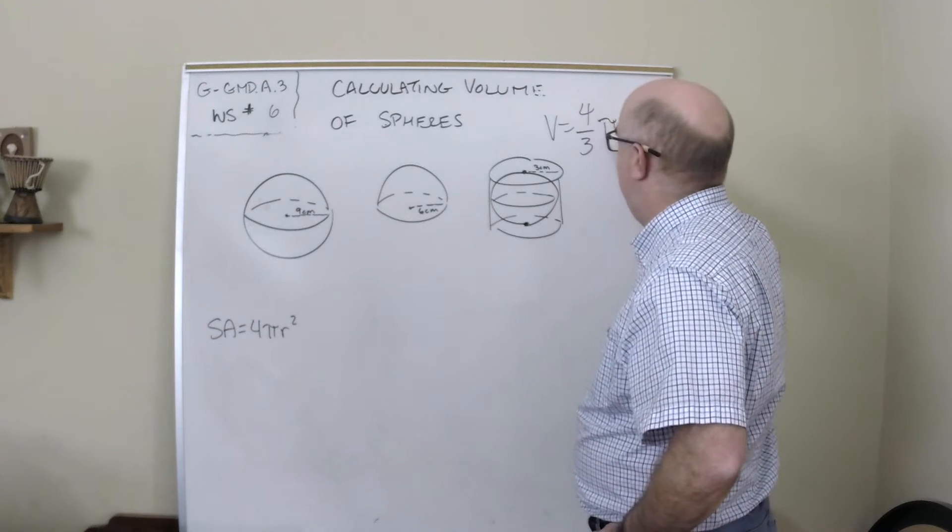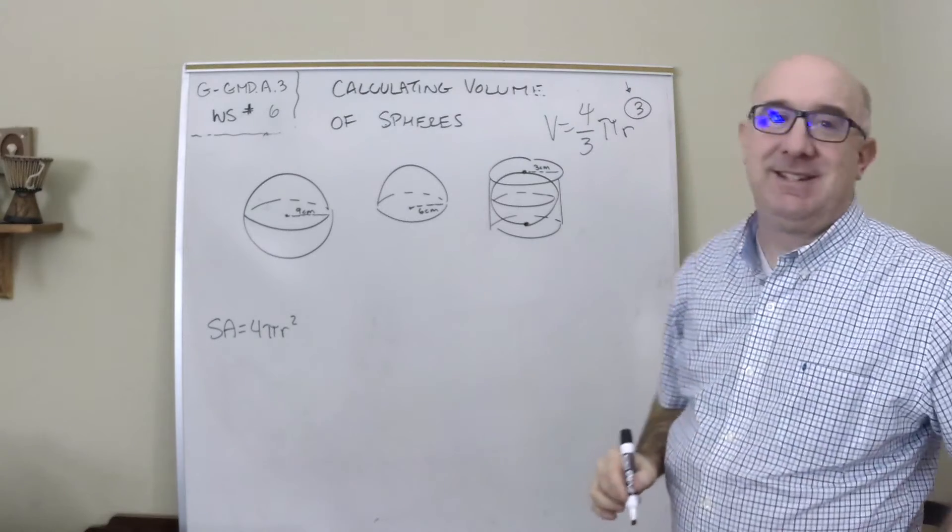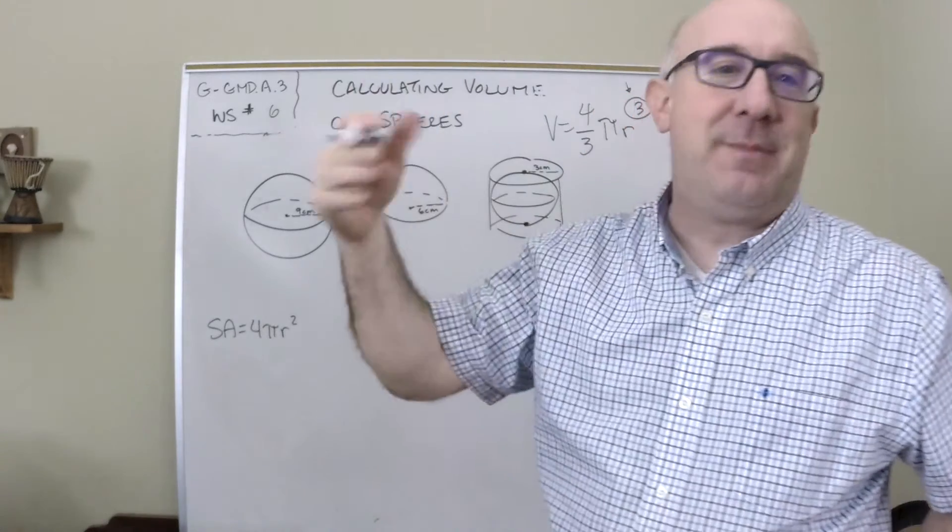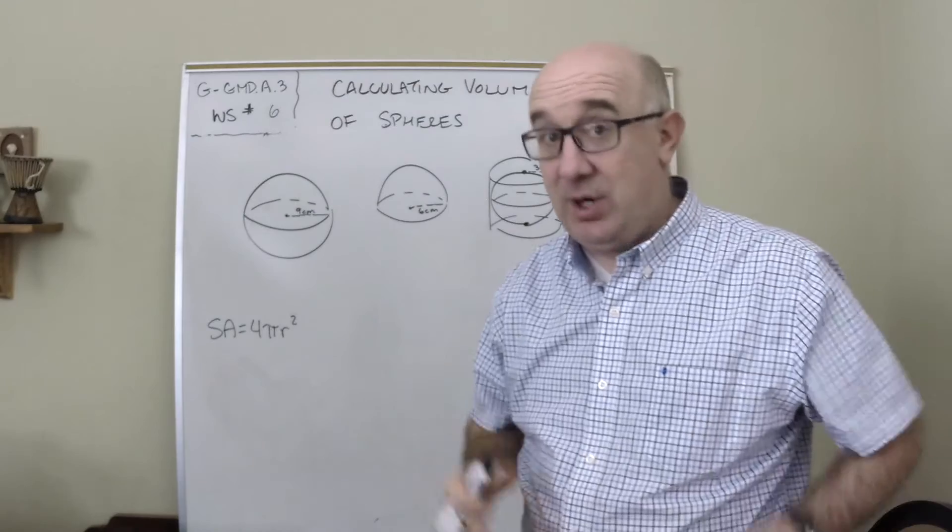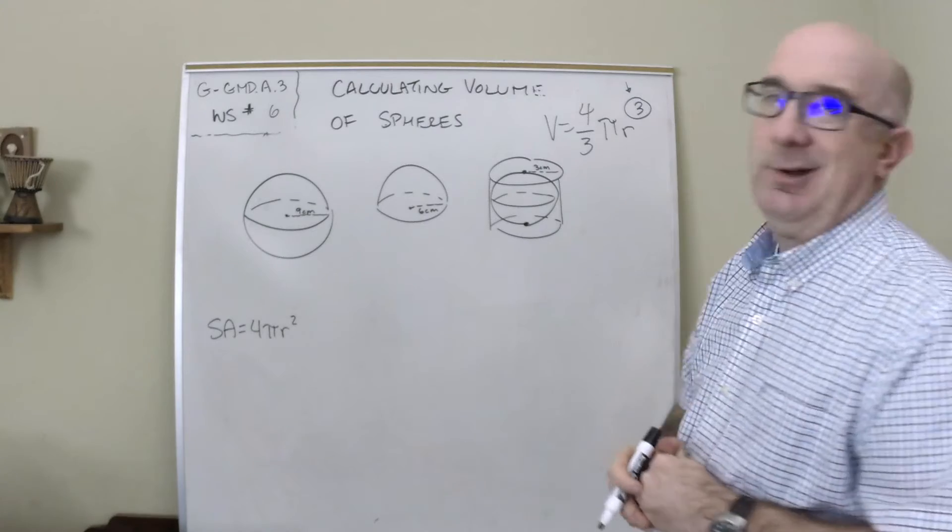That cubed is different—we're always doing something r squared. Just remember it's cubed because we're in the third dimension. Nobody likes the four-thirds, but the truth is that is what it is.